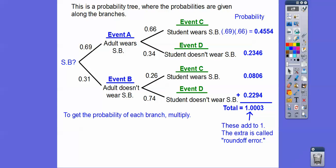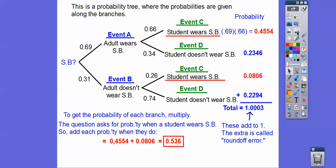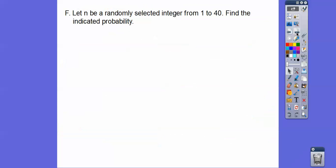The question asks for the probability that a student wears the seatbelt. That occurs in two branches: 45.54% and 8.06%. Adding those together, the probability that a student wears a seatbelt is 0.536.